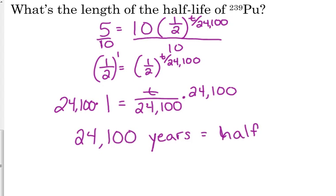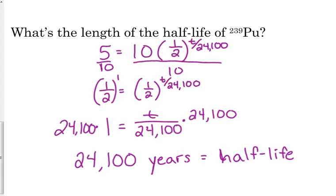So, it takes over 24,000 years for half of this radioactive material to decay. That's a really long half-life. So, after another 24,100 years, then another half of it will decay. So, after 48,200 years, there will be 2.5 pounds of it left.